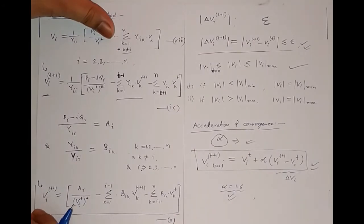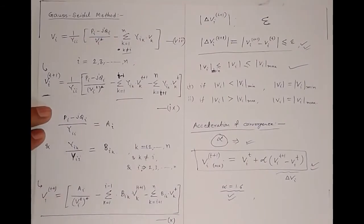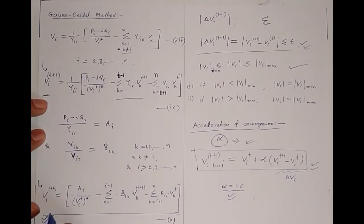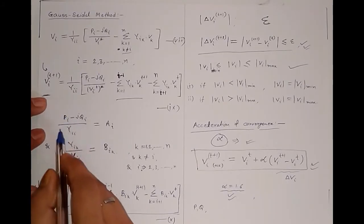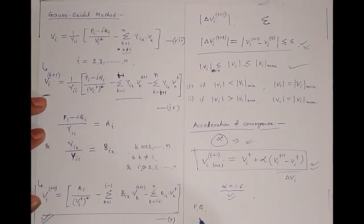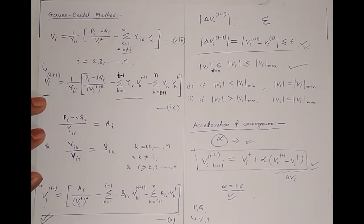This voltage expression is only valid for PQ buses, because here P and Q are given data and V is calculated from them — V is the unknown. Both the magnitude mod Vi and the angle delta i can be calculated with this equation, since we have not constrained the magnitude part only.